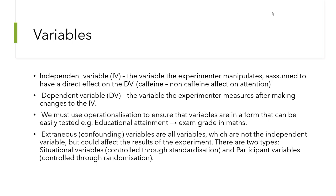When conducting these studies, we need to operationalize variables to make sure they're easily tested. There's no point calling a dependent variable something vague like 'educational attainment' — it needs to be specific and quantifiable, such as an exam grade on a scale of 1 to 100. Variables should be scalable, or could be nominal counting data, like how many people were smokers versus non-smokers.